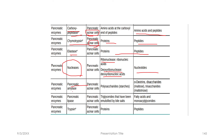Pancreatic amylase digests starch — it breaks down polysaccharides into alpha-dextrins, disaccharides, and monosaccharides. Pancreatic lipase is involved in lipid digestion, breaking down triglycerides into fatty acids and monoglycerides.